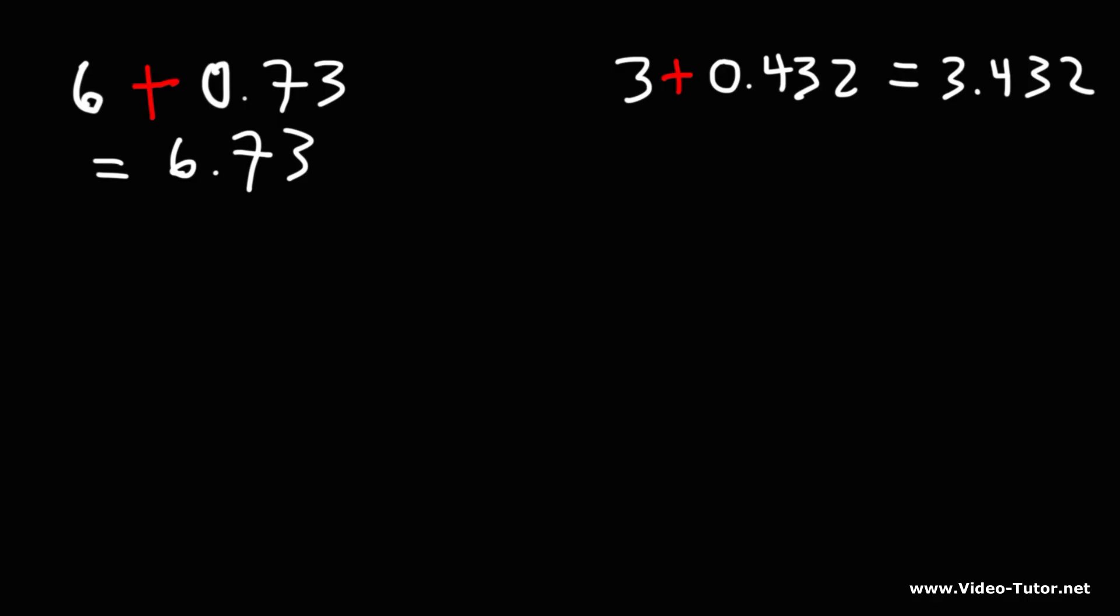Now, if you need to show your work, here's what you can do. For the first example, 6, you can write 6 as 6.00. And then below that, 0.73. You want to make sure that the decimal points are lined up.